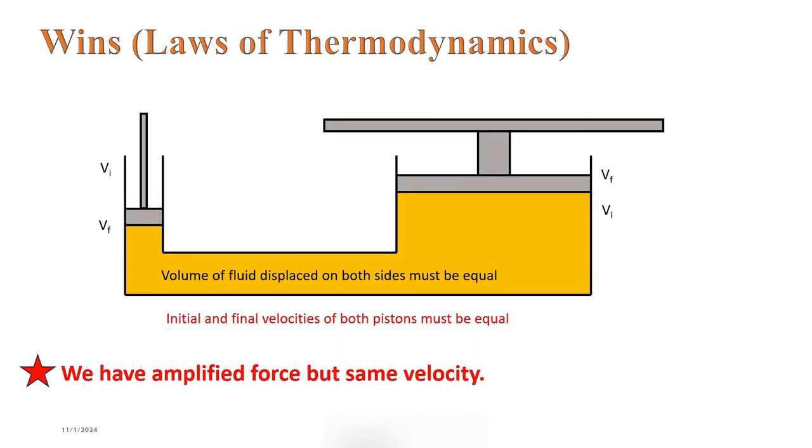The wins outrun the losses. For incompressible fluid, the initial and final velocities of the pistons are conserved. This means that if a vehicle is traveling at x miles per hour, the velocity of the output piston rod will also be x miles per hour during impact. We have lost piston height, but it's a fair trade.